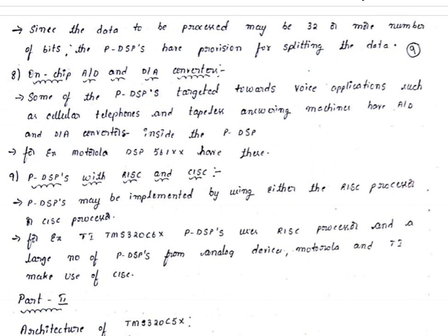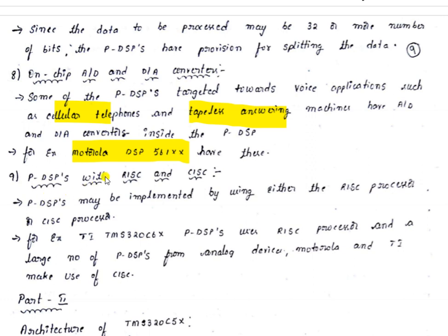Some programmable DSPs are targeted towards voice applications such as cellular telephones and tapeless answering machines, and include on-chip A2D and D2A converters inside the DSP. The best example of this type is the Motorola DSP56001 processor.